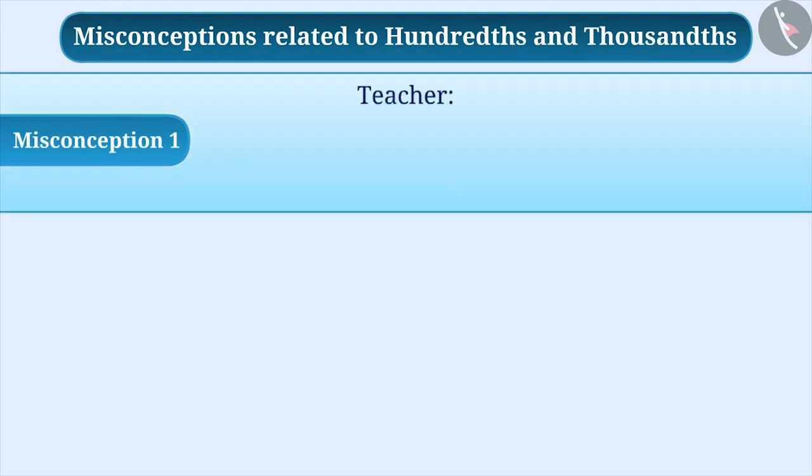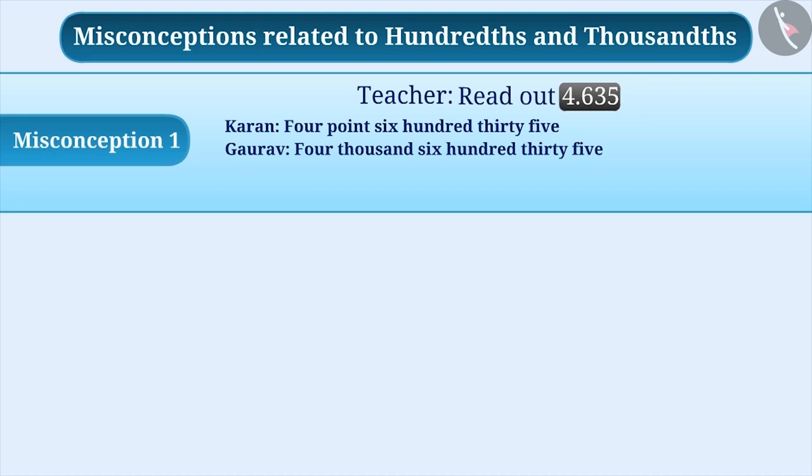Misconception 1. The teacher has written a number on the blackboard and asked the students to read it. Karan read it as 4.635, Gaurav read it as 4635, and Nirmal read it as 4.635. Identify who read the given number correctly.